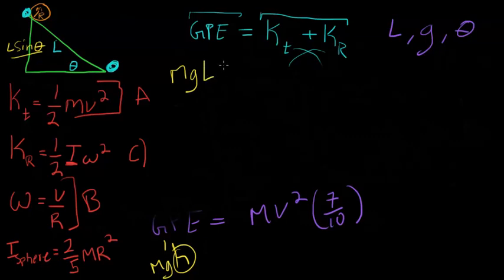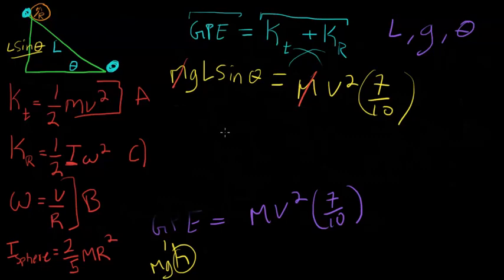We're going to have MGL sine theta is equal to, well, what's this big thing again? Well, we have it right down here. M V squared 7 over 10. Now, it's asking for, to find the velocity. It wants to find the velocity at the very end, which is right here. So, we need to, pretty much, it's just using algebra to solve for this equation. Which, you know, boom, we'll just cross out the M's here. And then we'll get GL sine theta equals 7 over 10 V squared.